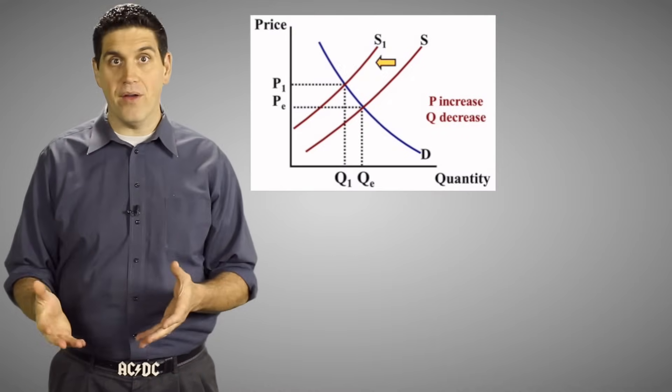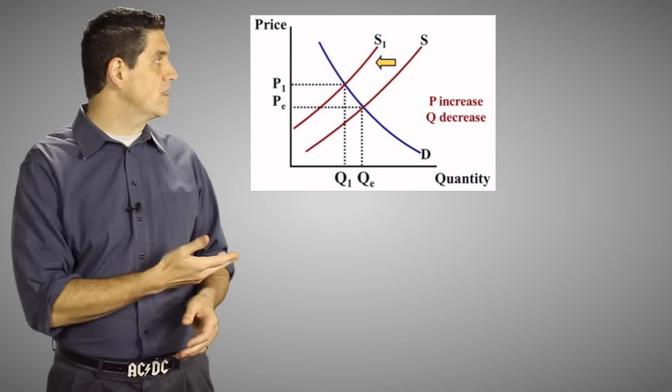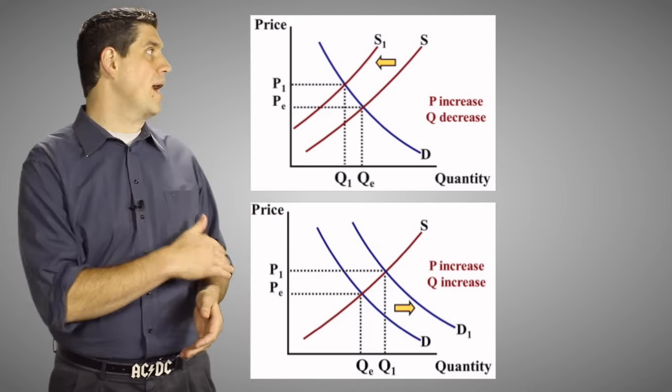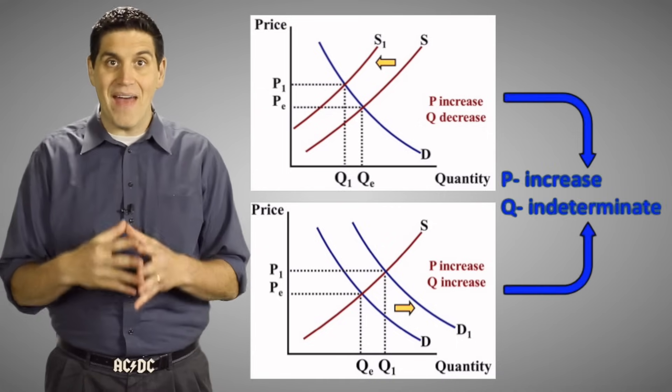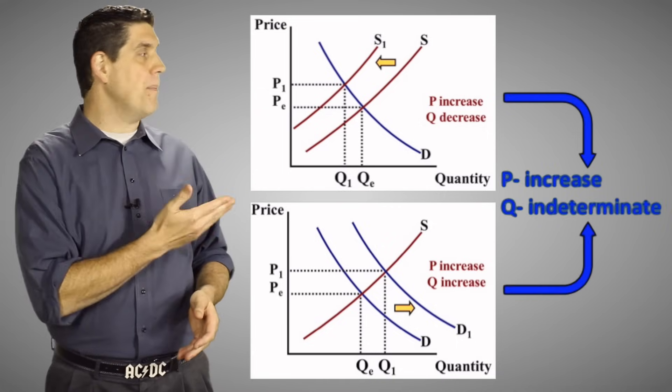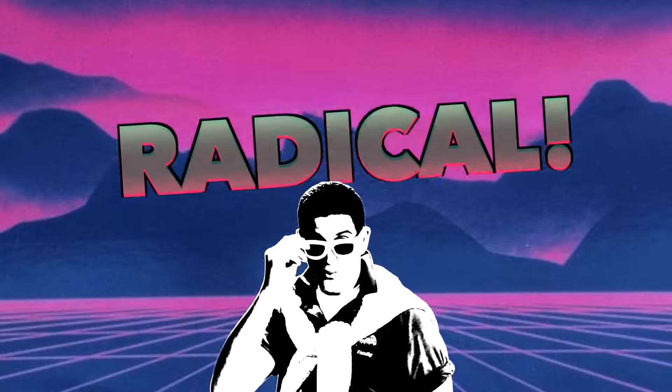Again, it's easier to separate them out. If the supply shifts left, price goes up, quantity goes down. If demand goes up, price goes up, quantity goes up. You add that together, the price is going up, the quantity indeterminate. Radical.